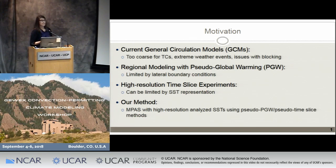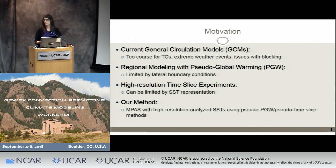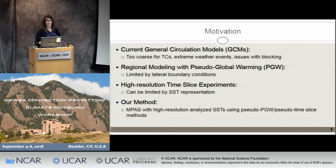The reasons for doing our own set of simulations rather than using existing data: GCMs just can't capture the type of phenomenon that we want to look at, especially in the context of climate change. So we're not getting tropical cyclones, extreme precipitation, there are issues with the representation of blocking — all of these things that we're interested in looking at how climate change will affect, we can't do in GCMs.